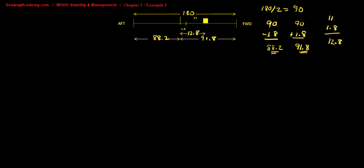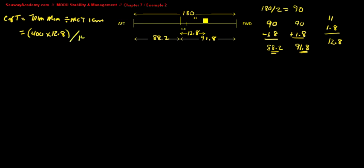You need this distance to calculate your trimming moment. To calculate your change of trim, it's your trimming moment divided by the moment to change trim one centimeter. The trimming moment is the weight of 400 tonnes times the distance to the center of flotation, 12.8, divided by the moment to change trim, which is 140. So your change of trim is 36.57 centimeters by the head.